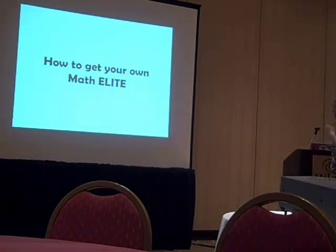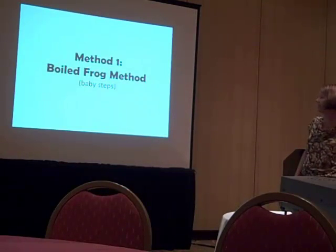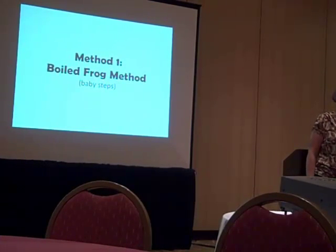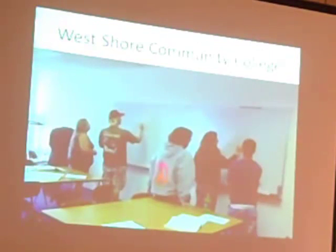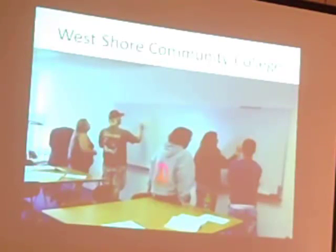I want to spend the last two minutes talking about how you get your own MATH ELITE. Method number one I call the boiled frog method — your administration is being cooked, not you. You start with baby steps. Say, 'I have a room, it doesn't have enough whiteboards. I'll ask for one more wall of whiteboards.' Campuses purchase whiteboards in bulk, which means somewhere on campus there is a room full of unclaimed whiteboards at the end of the year. Find where that room is and claim them. The custodians will get used to asking you where you want them.